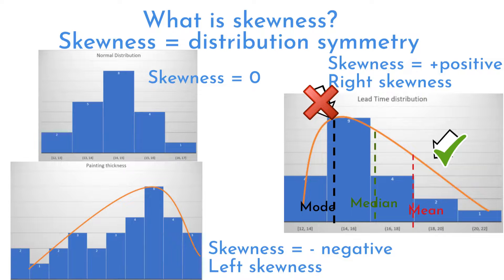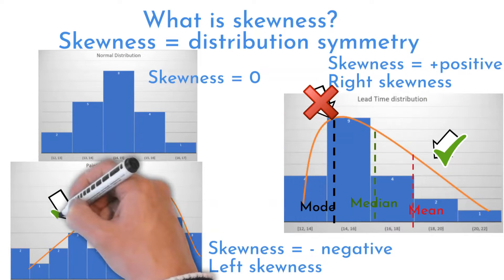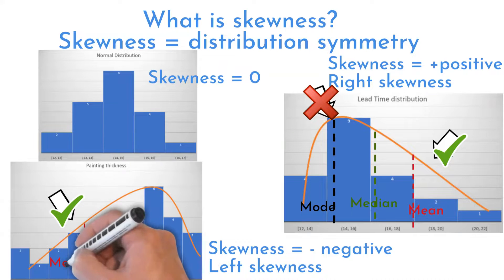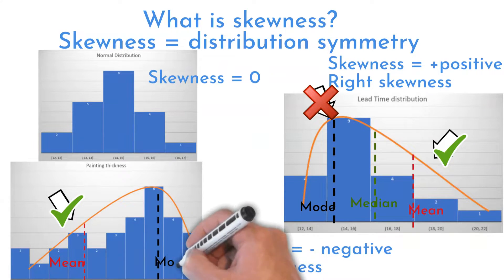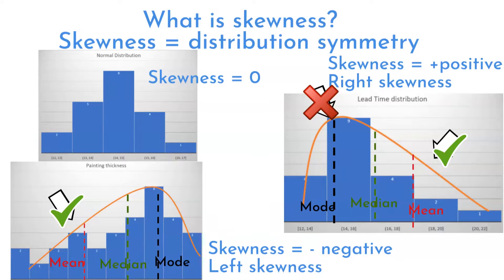On the left skewed distribution, most of the data values occur on the right side. And this is where mean, mode and median are located on the left skewed distribution. It is opposite to right skewed distribution.